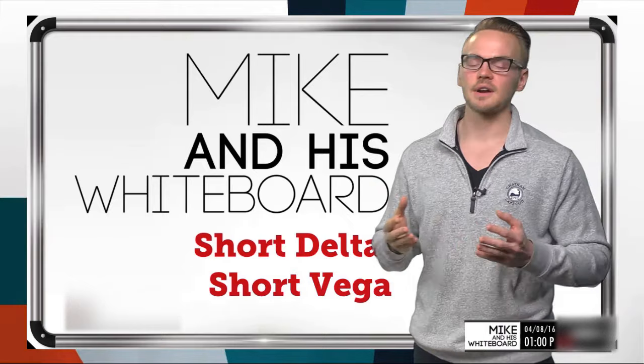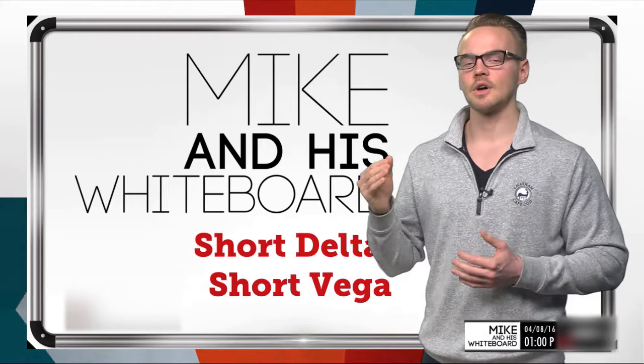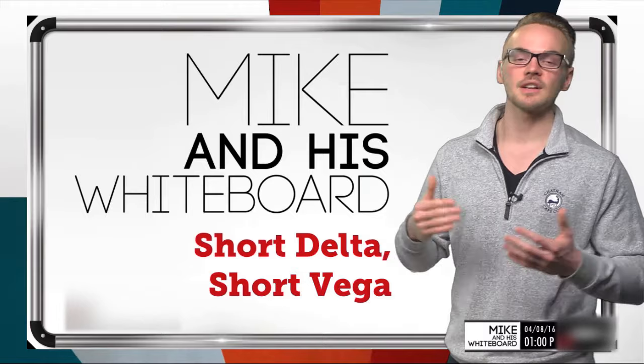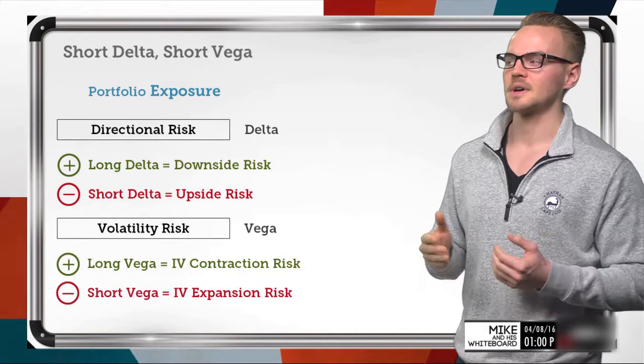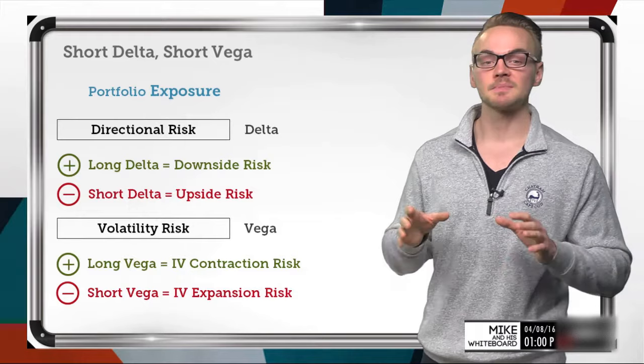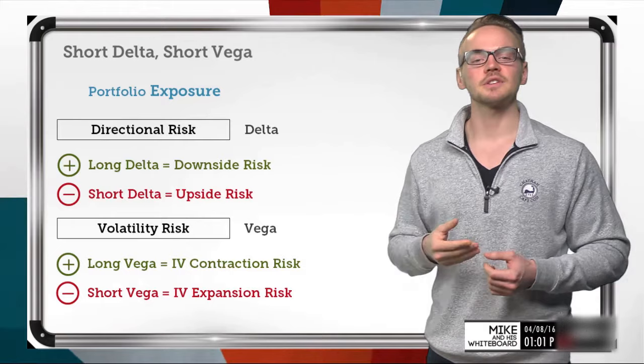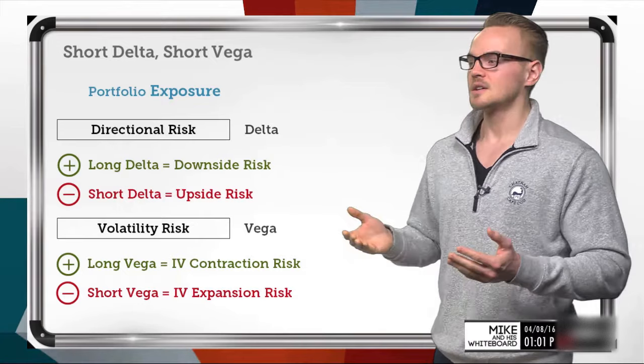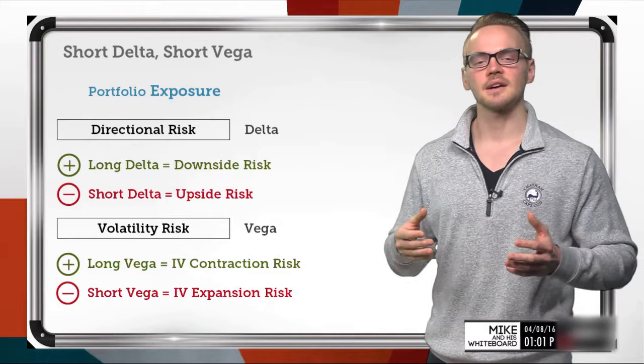We're going to talk about first what we mean with delta and vega altogether — what are some things I need to be concerned with when I'm long delta or short delta, and also long vega and short vega. When we're looking at portfolio exposure, there are a couple of things that come to mind when trading options. Number one is going to be directional risk, and we refer to directional risk as our delta exposure.